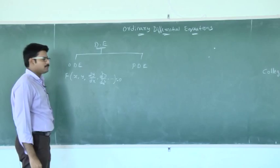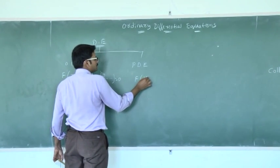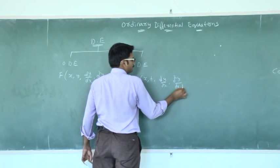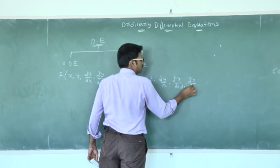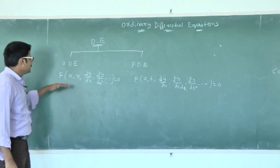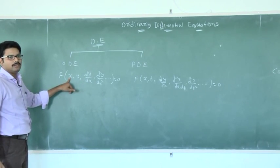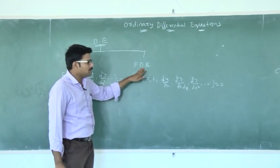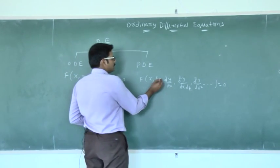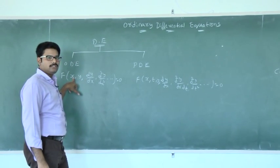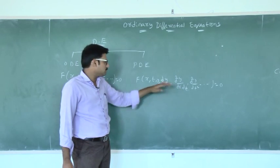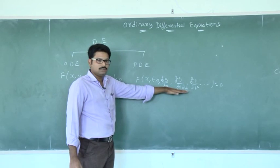The standard form of the partial differential equation is f(x, t, ∂y/∂x, ∂²y/∂x∂y, ∂²y/∂x∂t, ∂²y/∂t², ...) = 0. The difference between ordinary and partial differential equations is that the ODE involves only one independent variable, whereas the PDE involves two or more independent variables. In both, y is the only dependent variable.